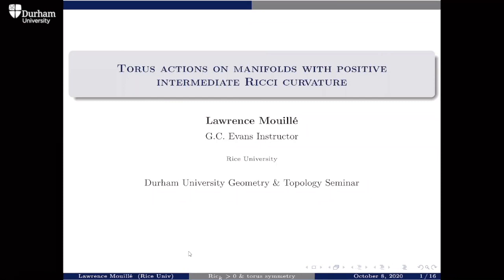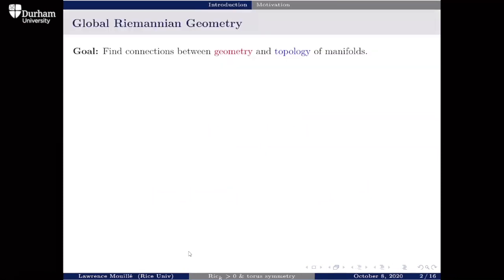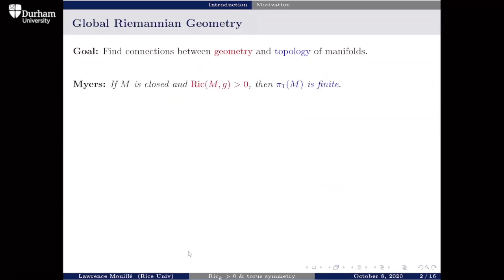I'd like to start with an overview of the area I'm working in, which is global Riemannian geometry. The goal is to find connections between the geometry of a space and its underlying topology. I'm particularly interested in curvature lower bounds — if I have a lower bound on sectional curvature or Ricci curvature, what does that tell me about topological information for the manifold? A classical result is Myers' theorem: if I have a closed Riemannian manifold with positive Ricci curvature, then the fundamental group must be finite.